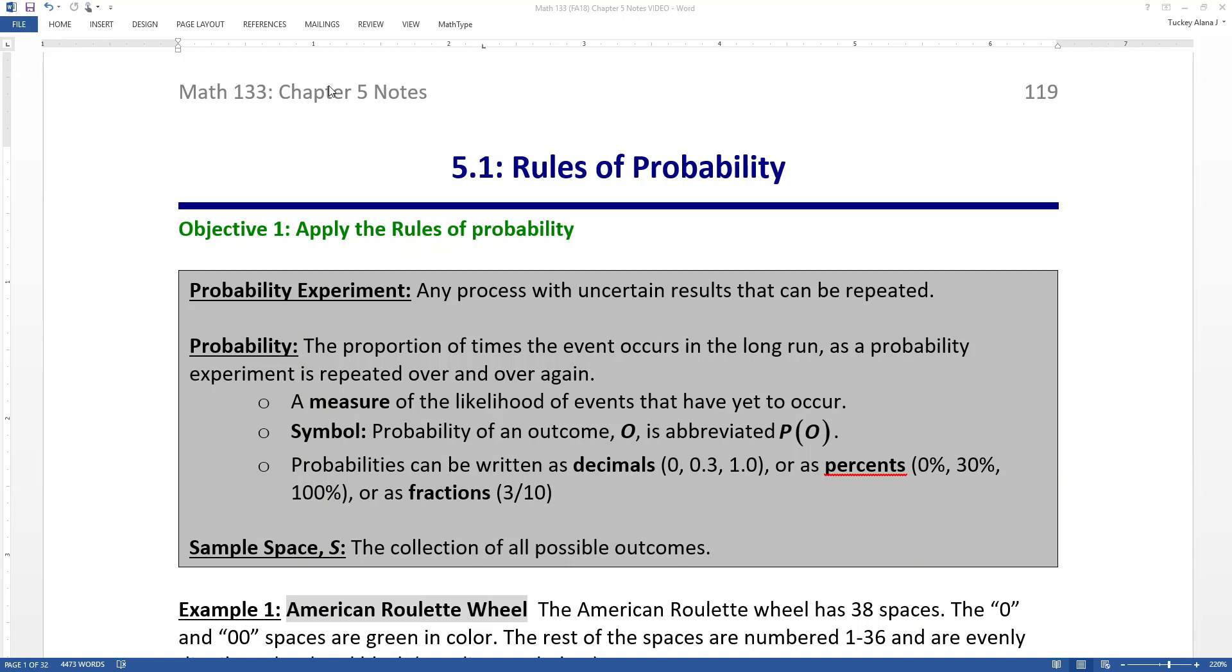Now before we can do any of that, because we're going to use probability for the rest of the class, right? Even past 5, 6, and 7, because we're going to use it to do the things we need to do in chapters 8, 9, 10, and so on. We need to have some definitions and rules. So that's why we start in section 5.1. So the rules of probability.